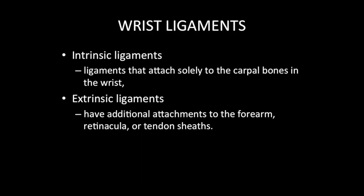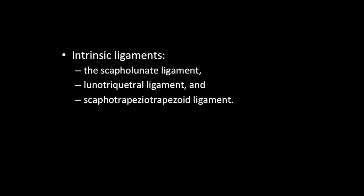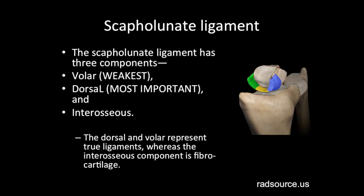With regards to the wrist ligaments, we have intrinsic ligaments that attach solely to the carpal bones and we have extrinsic ligaments that have additional attachments to the forearm, retinacula, or tendon sheaths. The main intrinsic ligaments include the scapholunate ligament, the lunotriquetral ligament, and the scaphotrapeziotrapezoid ligament or STT ligament. The scapholunate ligament is considered a three-sided box with three components: a volar component which is the weakest, a dorsal component which is the most important for stability and the thickest measuring up to three millimeters, and an interosseous component. The dorsal and volar components represent true ligaments, whereas the interosseous component is composed of fibrocartilage.